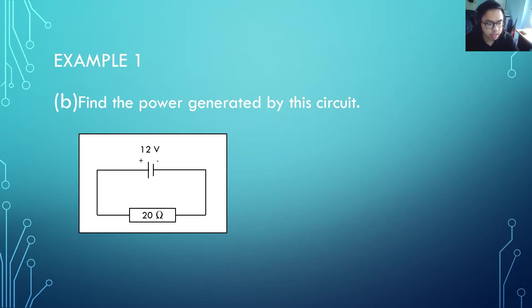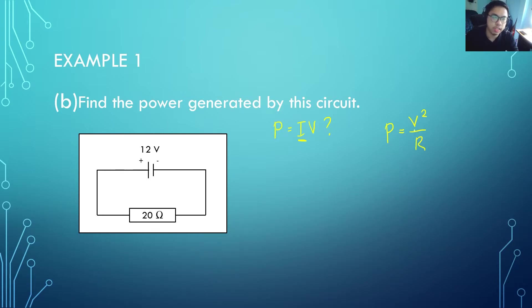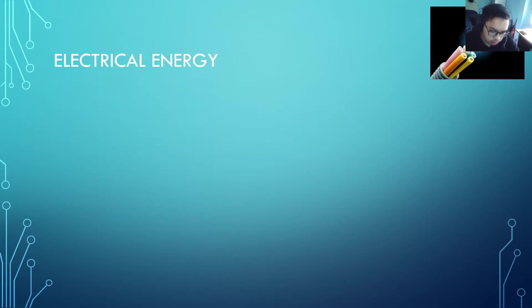Example 1b: You are given a circuit with voltage and resistance and asked to find the power generated. You cannot use P equals IV because the current is not given. Instead, use P equals V²/R, since only voltage and resistance are provided. Substituting the numbers gives an answer of 7.2 watts.